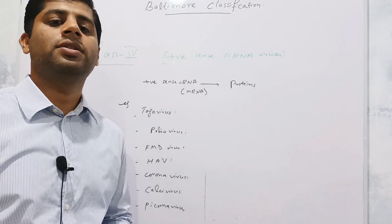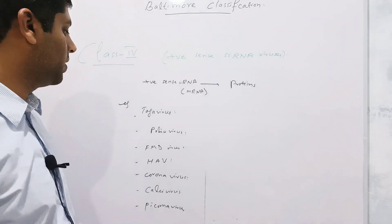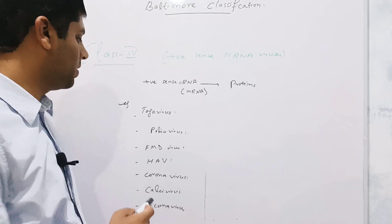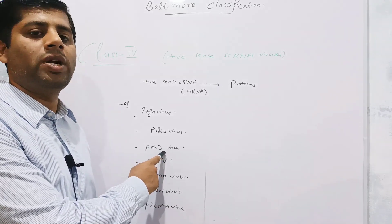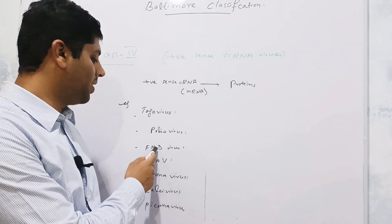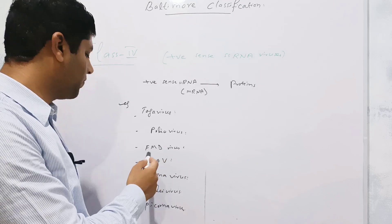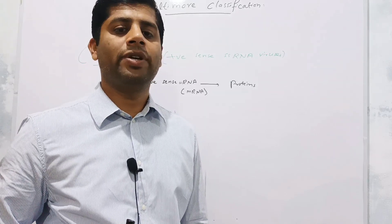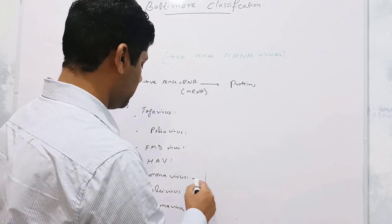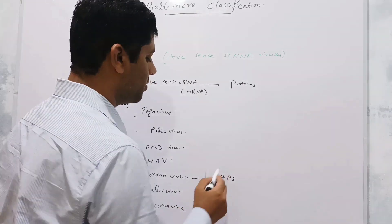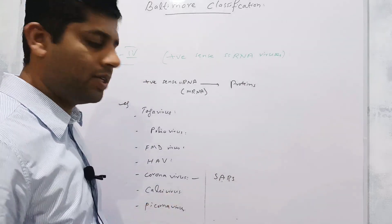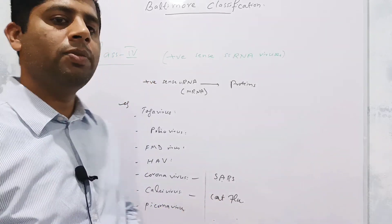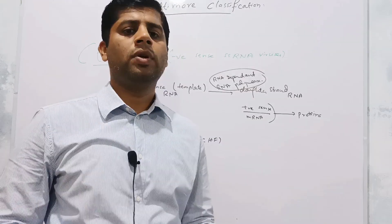Togavirus causes skin infection, fever, and body rash. Poliovirus causes paralysis of body parts, most often the limbs. FMD virus causes foot and mouth disease — an infectious viral infection in animals where blisters appear on their feet and mouth. Hepatitis A virus causes inflammation of the liver. Coronavirus causes respiratory tract infections, specifically SARS — severe acute respiratory syndrome. Calicivirus causes cat flu. Picornavirus causes endocarditis and meningitis.